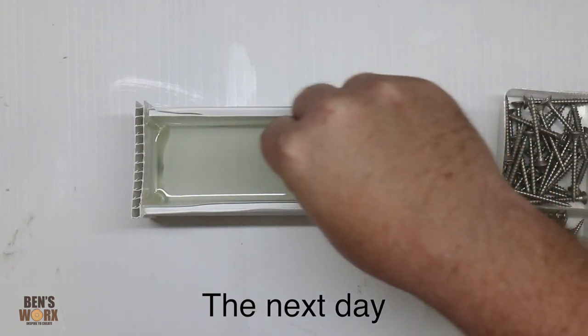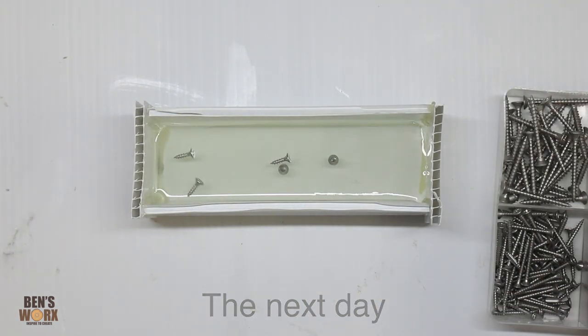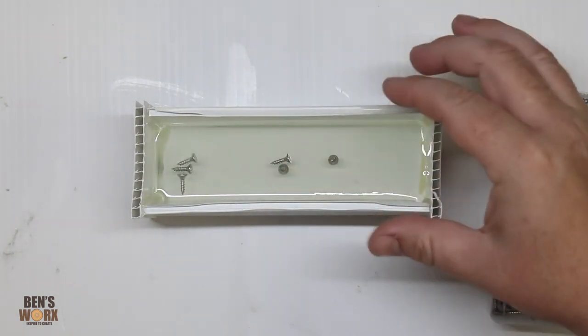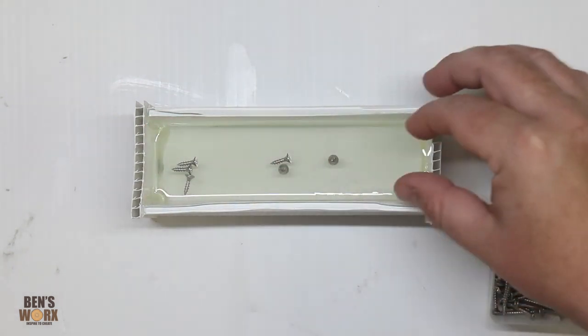I think the best way to do this is going to be to drop these screws in, then put the resin over the top, and then I'll be able to move the screws back to the middle. That way we keep them in this central corridor.